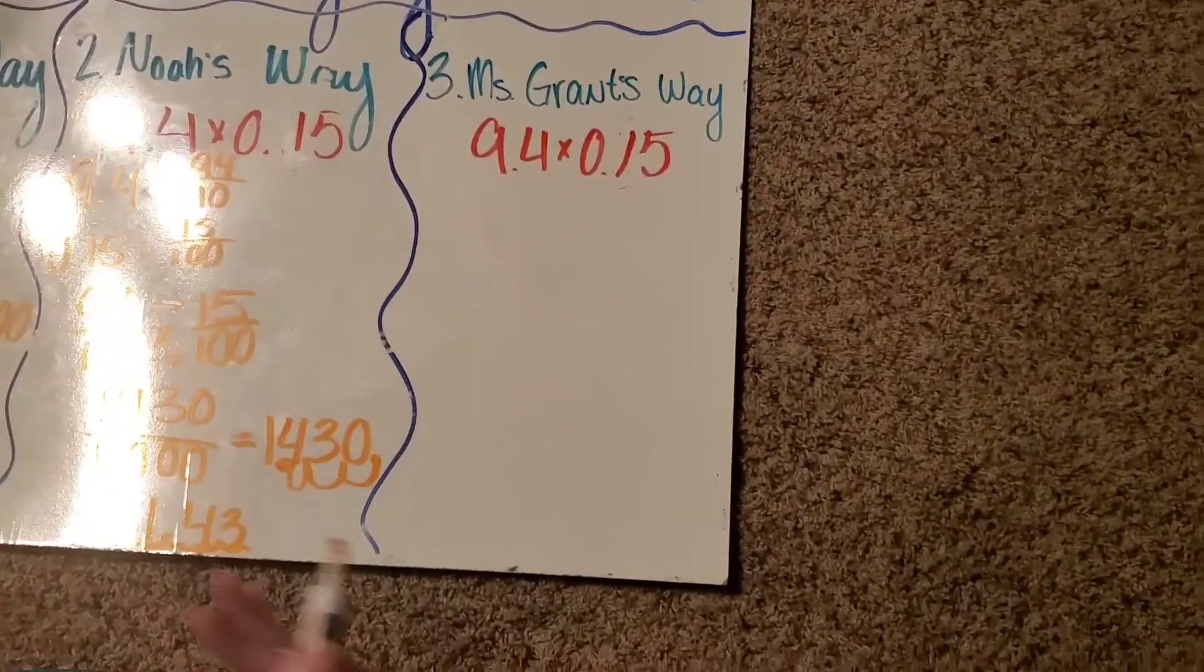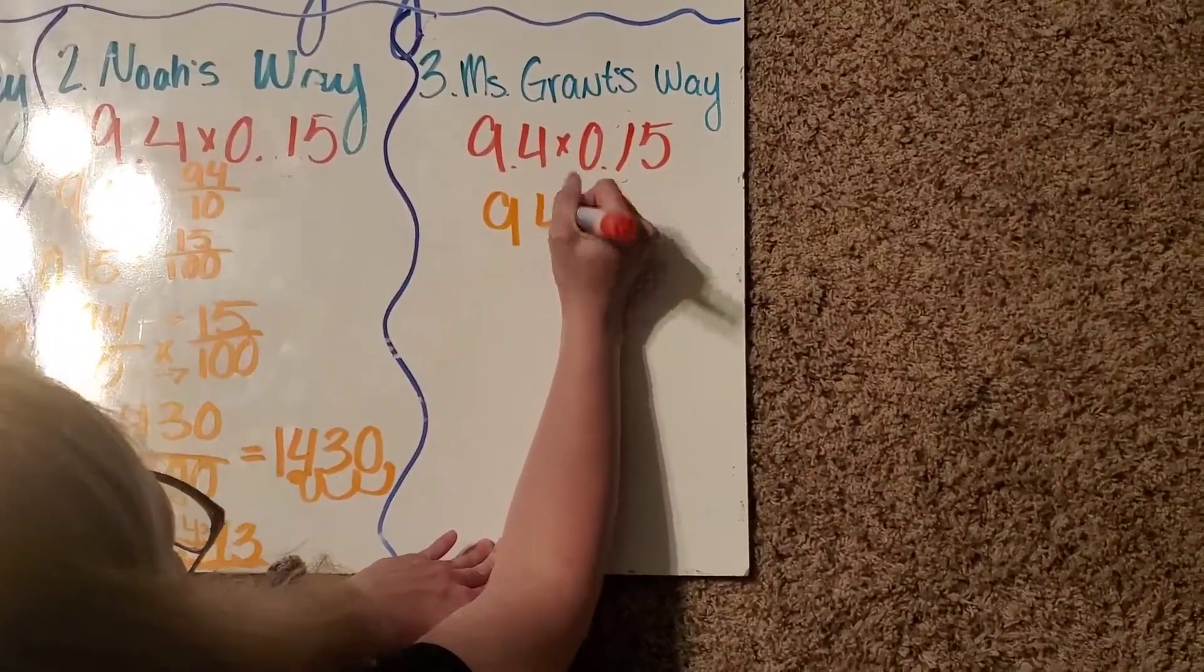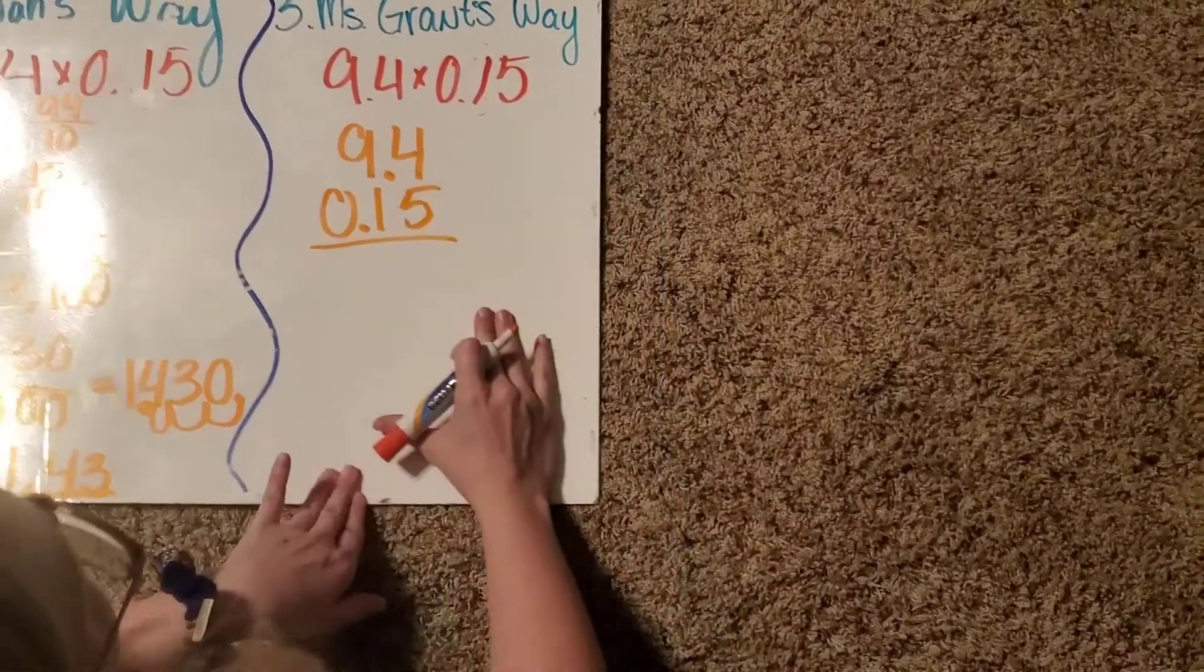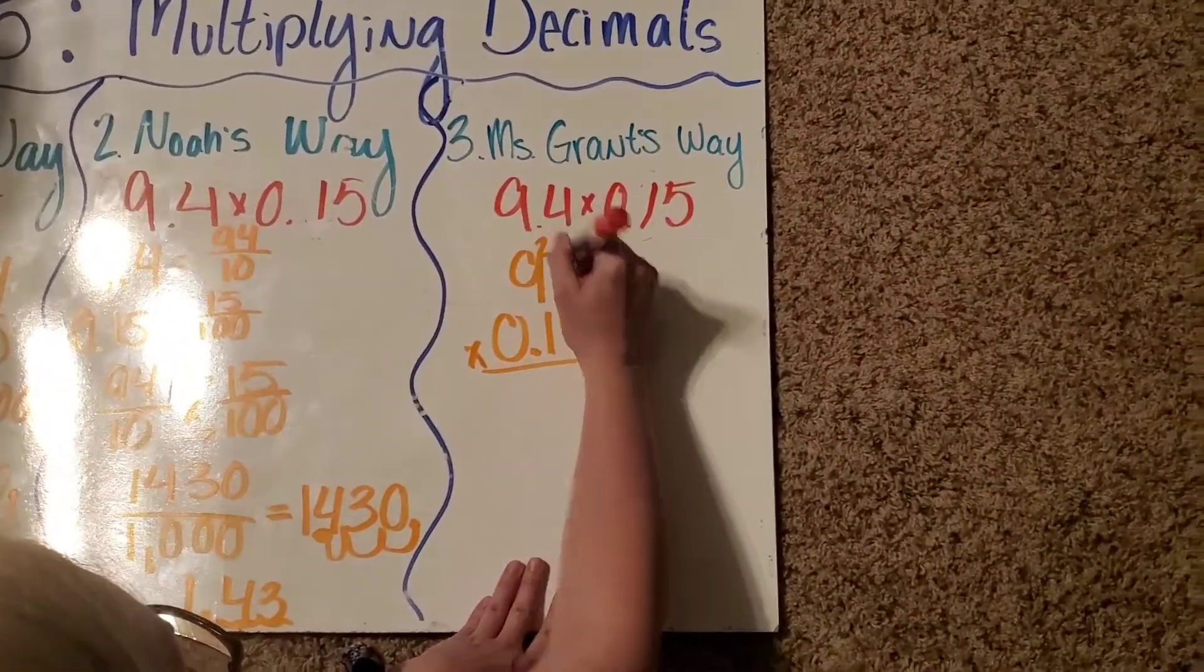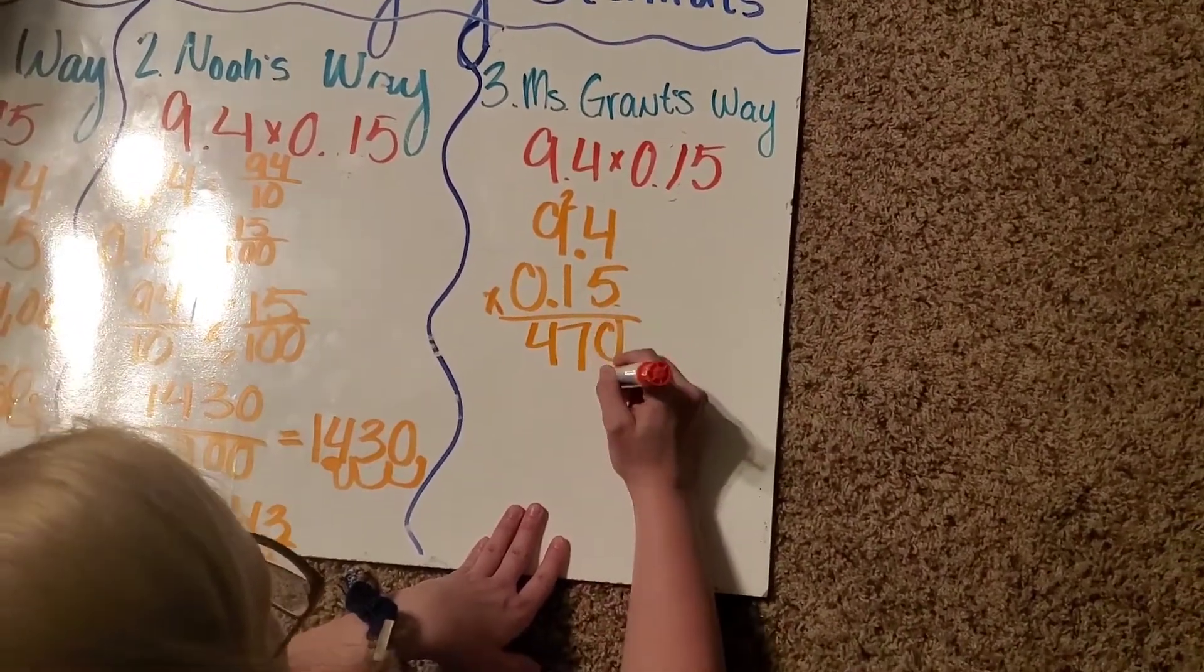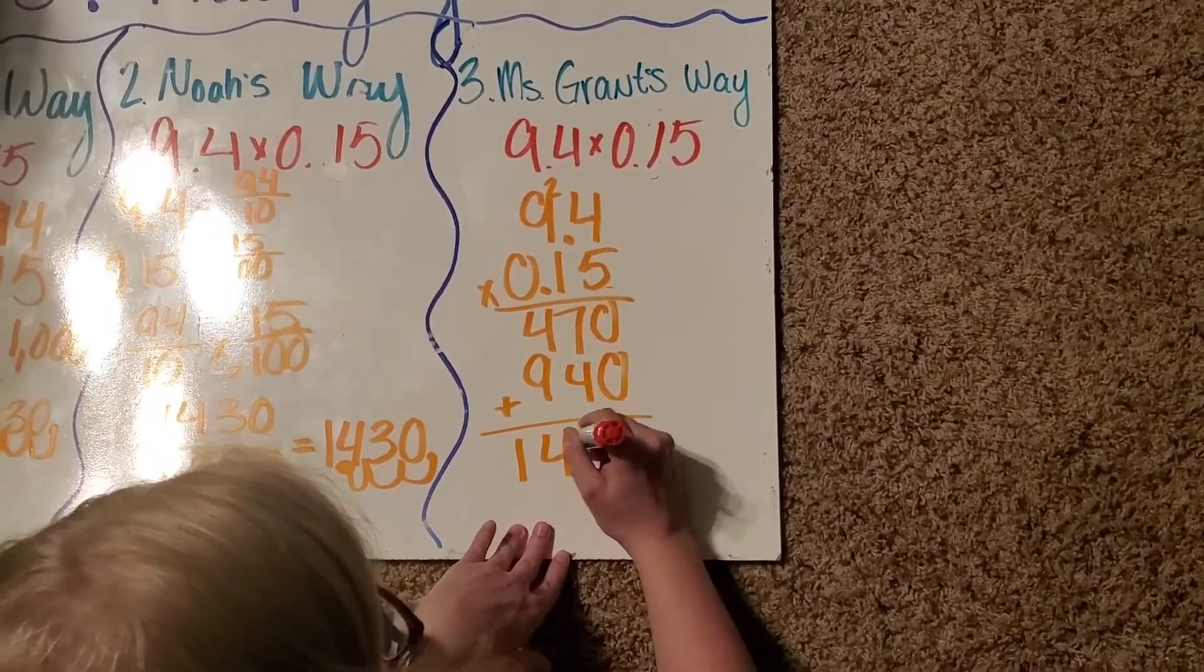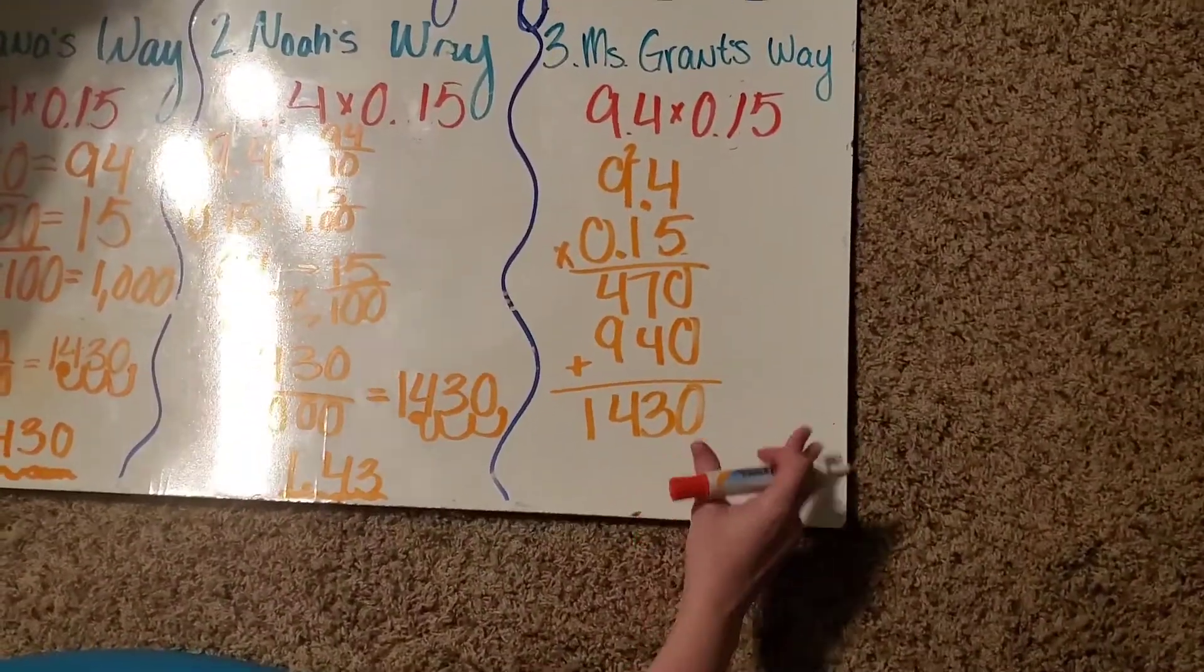Alright, my way. So, for this, you're going to pretend like the decimals aren't there, but you're still going to write them. And then, you're going to multiply like normal. 5 times 4 is still 20. We're going to get 47. Okay. This is the exact same thing we did when we started with Elena's way.